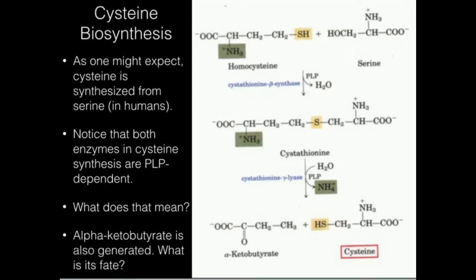In this video, we're going to talk about cysteine biosynthesis. Cysteine biosynthesis does occur in humans. This playlist is about non-essential amino acids, meaning humans can make them, so this is a purely human pathway. When we cover essential amino acids, there's a different playlist and a different pathway that makes cysteine for those organisms.